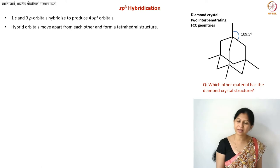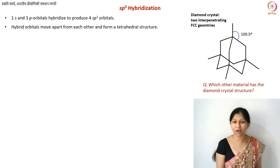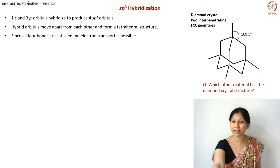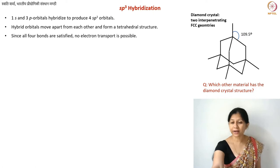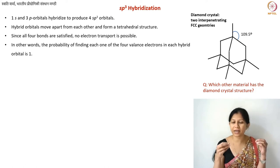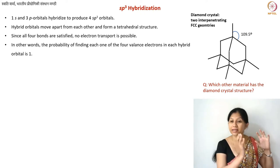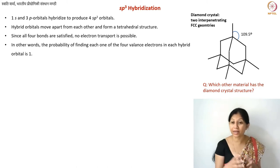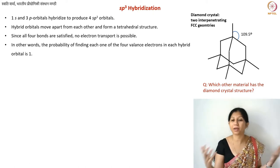This diamond cubic structure is relatively rare in materials in nature. However, there is one more technologically important element that also has the diamond cubic crystal structure — you can search for that yourself. Electron transport is not possible in diamond because all four bonds are satisfied. These electrons participate in bonding with other SP3 hybridized carbons, not with any external chemical. Bonding is between carbon and carbon only, because hybridization occurs at the time of bonding.